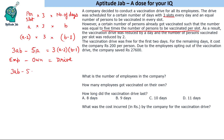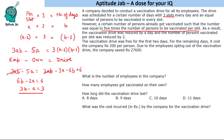Expanding the equation: 3ab minus 5a equals 3ab minus 6b minus 3a plus 6. The 3ab terms cancel. Bringing terms together: 6b minus 2a equals 6, which simplifies to 3b minus a equals 3. That is our first equation, where b is the number of days and a is the number of employees vaccinated per slot.